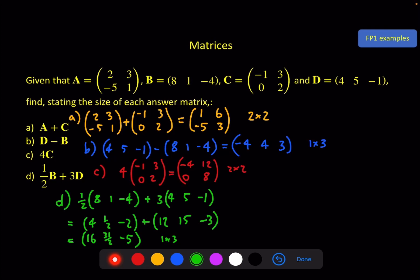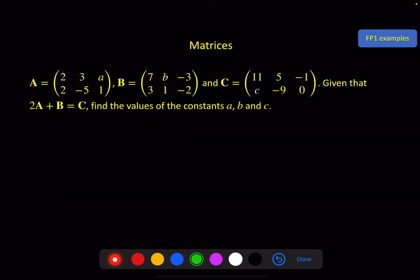And there we go. Second and final example. If A is this, B is this, C is this, given that 2A plus B equals C, find the values of the constants little a, little b, and little c.